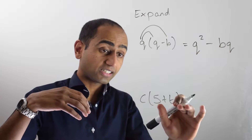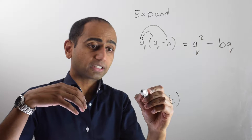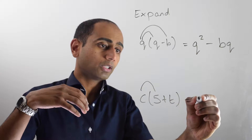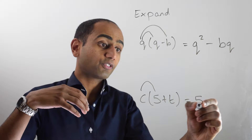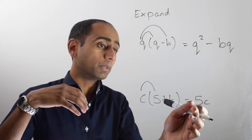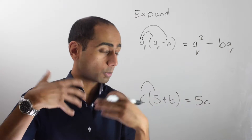In this example, I'm going to have c times five, which is five c. Remember, we want to put numbers before letters when we're multiplying.